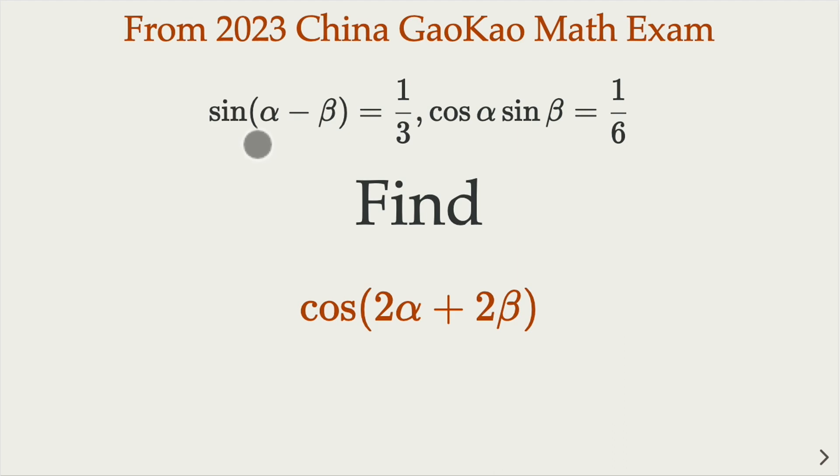We are given sin(α - β) = 1/3, cos α sin β = 1/6, and need to find the value of cos(2α + 2β).